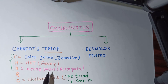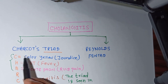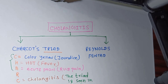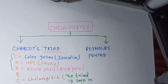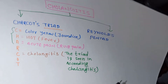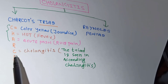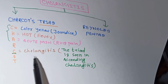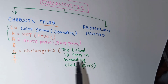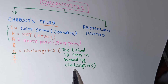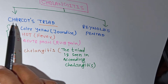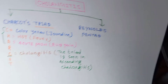These three clinical features make up Charcot's triad. We also need to understand in which condition we see this triad. The C here stands for cholangitis — specifically, we see Charcot's triad in the case of ascending cholangitis.